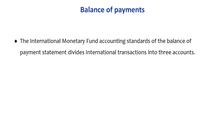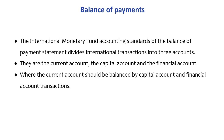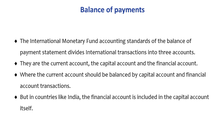The IMF accounting standards divide international transactions into three accounts: the current account, the capital account, and the financial account, where the current account should be balanced by the capital and financial account transactions. In countries like India, however, the financial account is included within the capital account, so there are only two major accounts: current account and capital account.